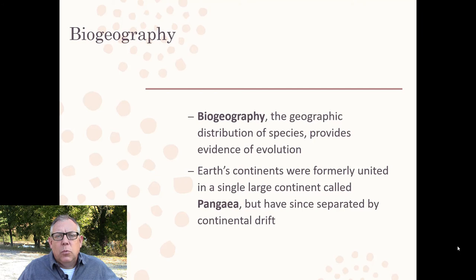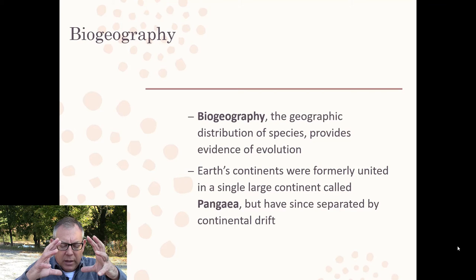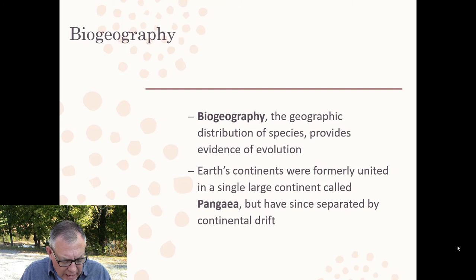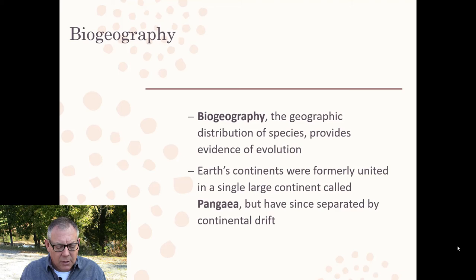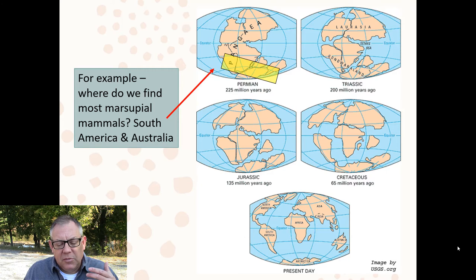When you combine this with other sciences — geology, geography, physics — we found that at one time all the continents on earth were one big continent called Pangaea. Because of continental drift, Pangaea broke up and formed the different continents we see today, and the continents are still moving even today. Biogeography looks at this and says it helps explain the modern-day distribution of a lot of organisms.